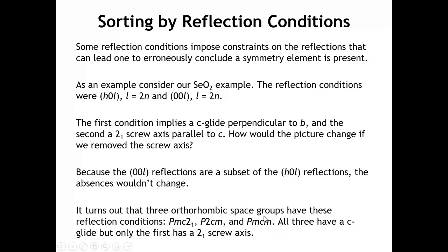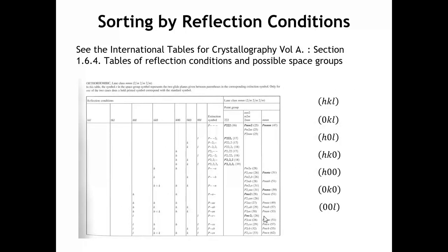These space groups all have different symmetries. The commonality is they all have a C glide, but only the first has a 2₁ screw axis. Because of this kind of ambiguity, it's best to use the tables found in the International Tables for Crystallography, specifically Section 1.6.4.